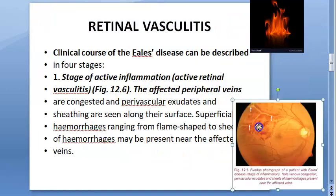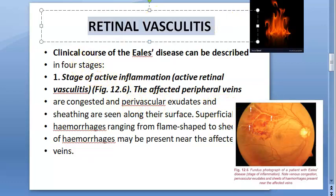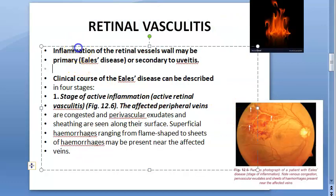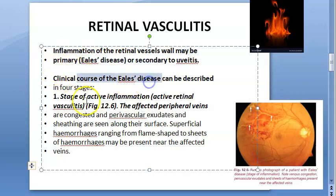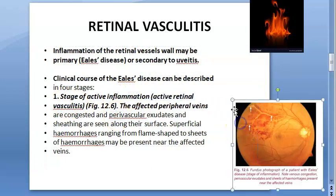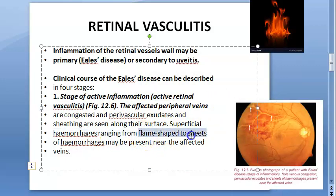Another cause of flame-shaped hemorrhage is retinal vasculitis — that is, inflammation of the retinal vessels. This inflammation can occur because of Eales disease or secondary to uveitis. In Eales disease, the very first stage involves retinal vasculitis, and you can have flame-shaped hemorrhage at that early stage.